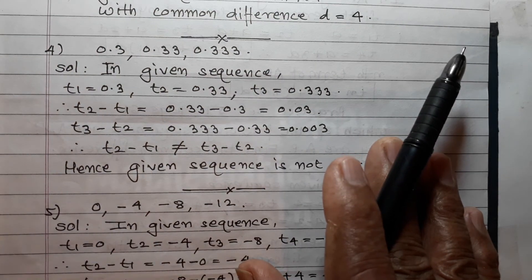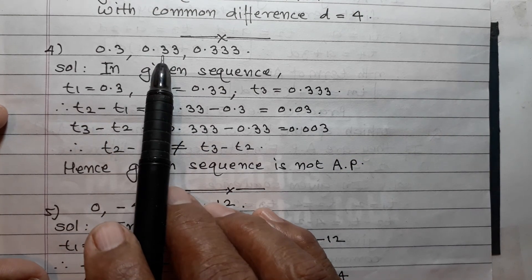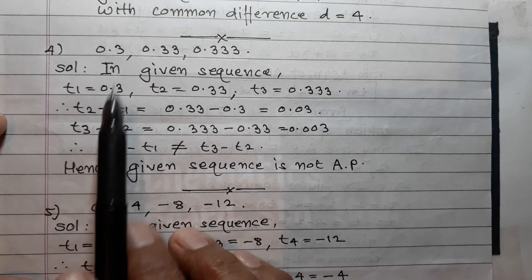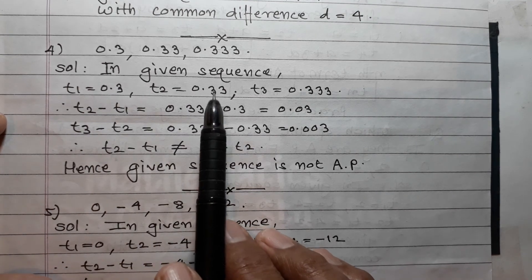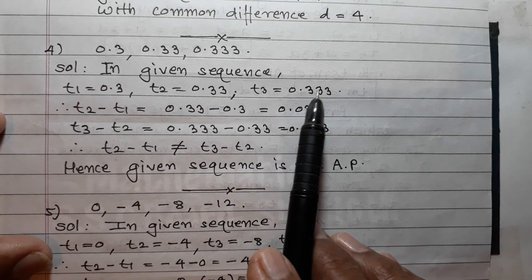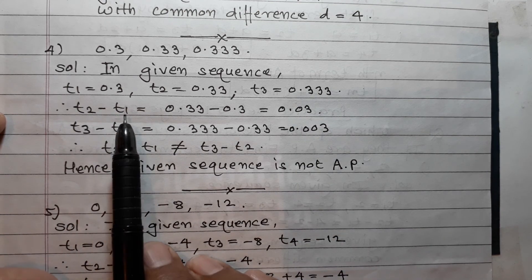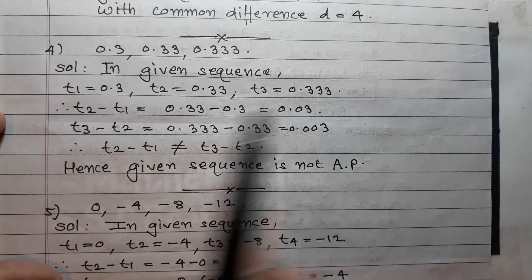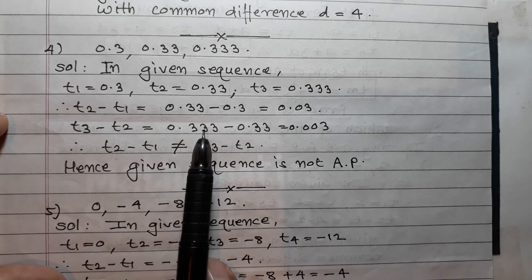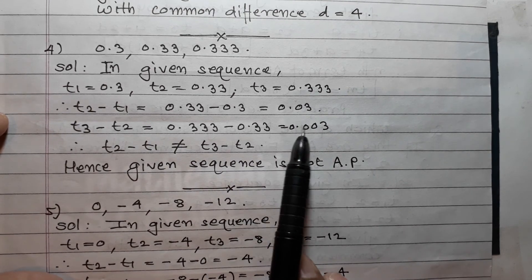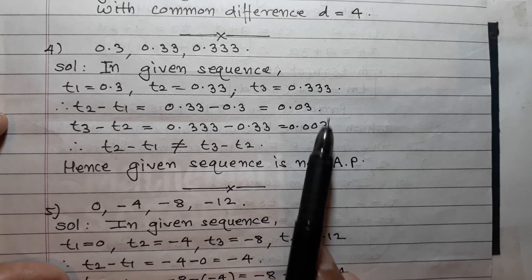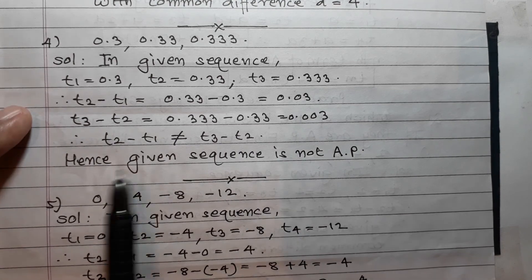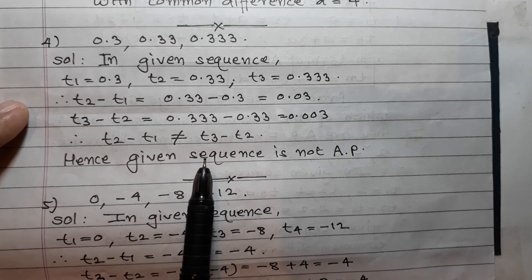Question 4: 0.3, 0.33, 0.333, ... Solution: t1 = 0.3, t2 = 0.33, t3 = 0.333. t2 - t1 = 0.33 - 0.3 = 0.03. t3 - t2 = 0.333 - 0.33 = 0.003. This difference is not equal, so t2 - t1 ≠ t3 - t2, and hence the given sequence is not an AP.